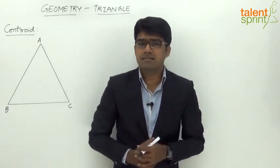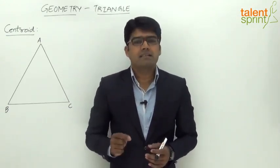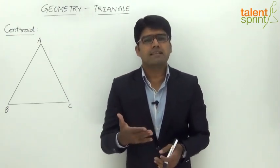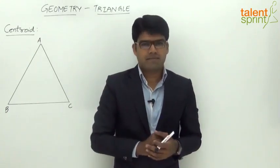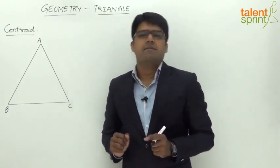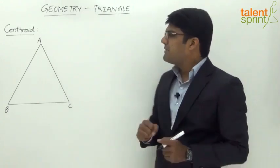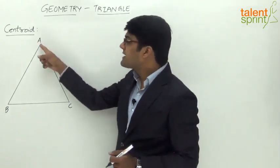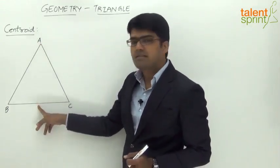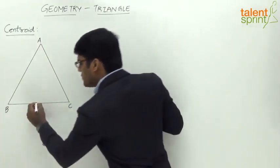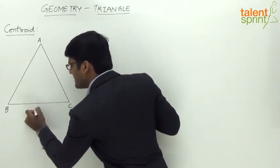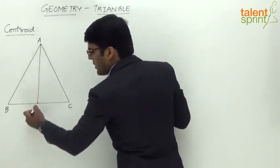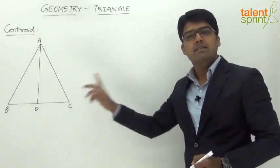Now what is meant by median? A median is a line that connects the vertex of a triangle with the midpoint of the opposite side. Let us understand this with the help of a simple illustration. Here we have a triangle ABC. As mentioned, median is a line that joins the vertex of the triangle with the midpoint of the opposite side. The opposite side here is BC. Let us assume that the midpoint of side BC is D. So the median would be AD — the line joining the vertex with the midpoint of the opposite side. So AD is one of the medians.